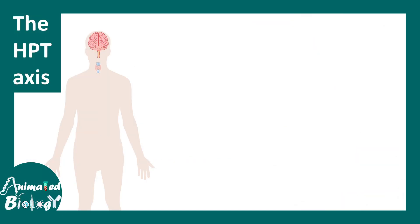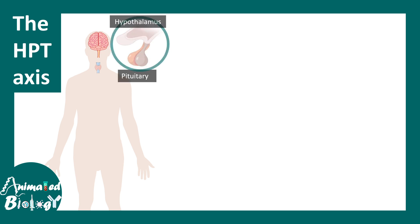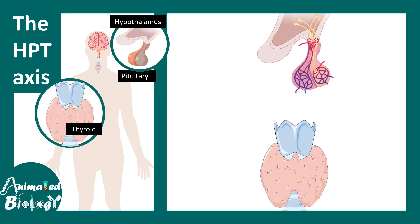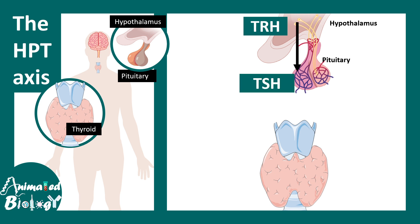This axis includes the hypothalamus, pituitary, and the thyroid gland. From the hypothalamus, TRH hormone gets secreted into the hypophysial portal system, which ultimately leads to the release of TSH hormone from the pituitary.